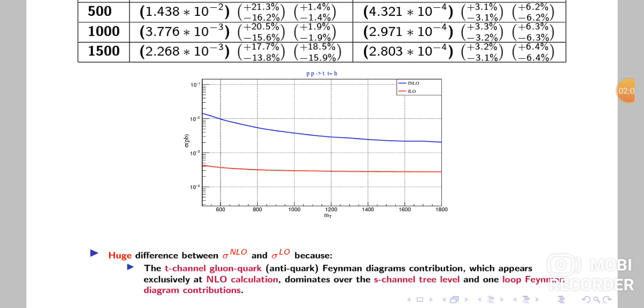which appears exclusively at next-to-leading order calculation, dominates over the S-channel tree-level and one-loop Feynman diagram contributions.